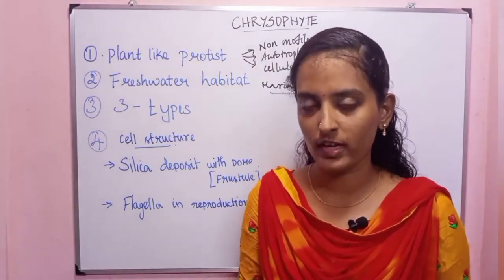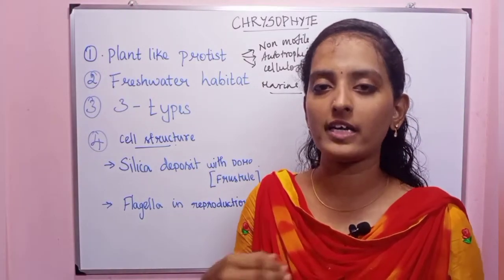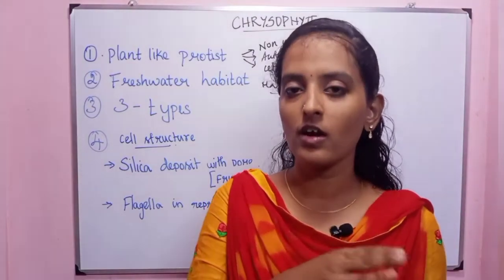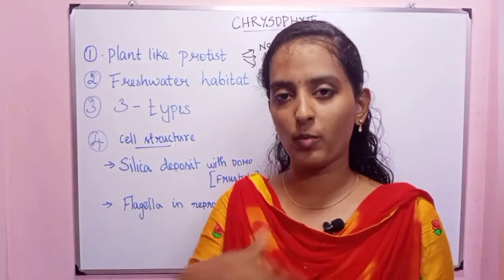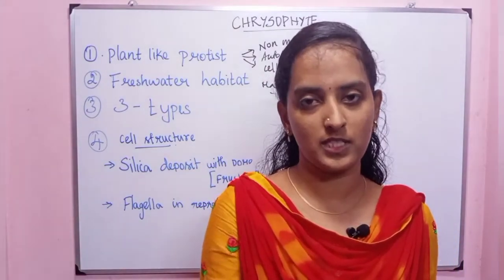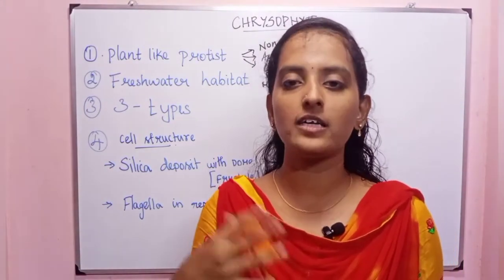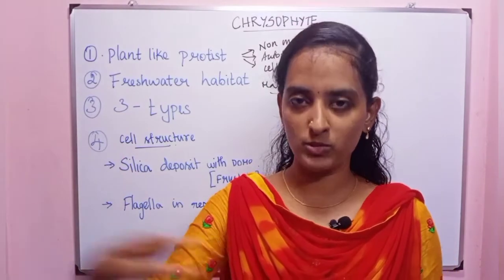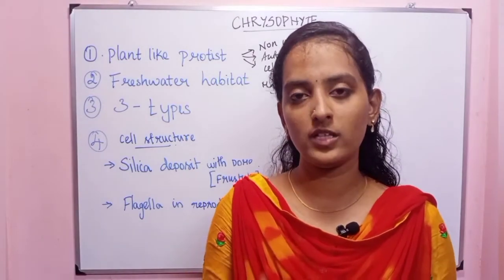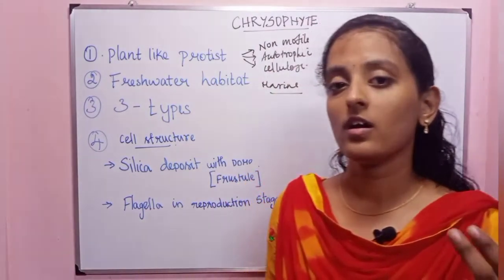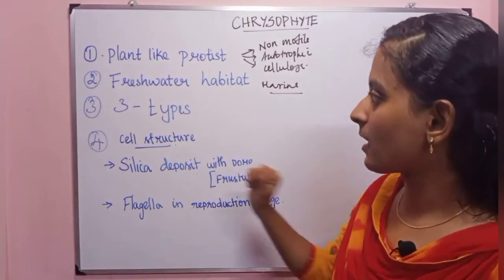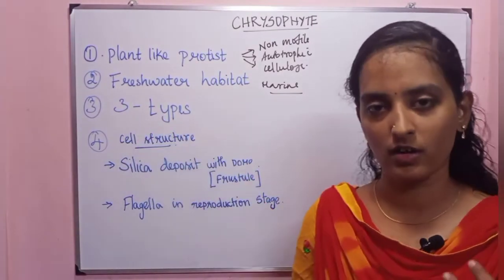Floating is of two types: passive floating and active floating. Passive floating is by water current — the organism moves with the water. Active floating is where the microorganism moves on its own. Chrysophytes are passively floating.